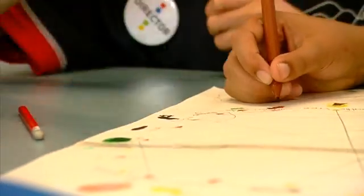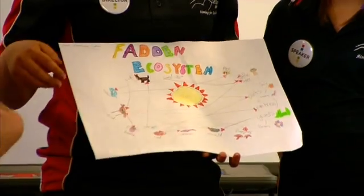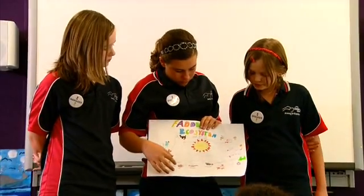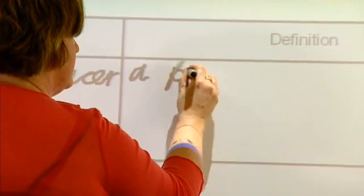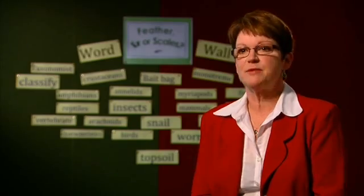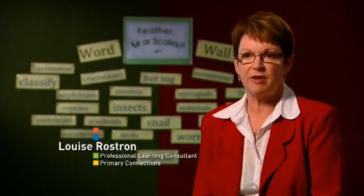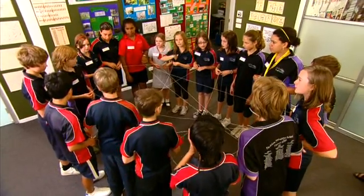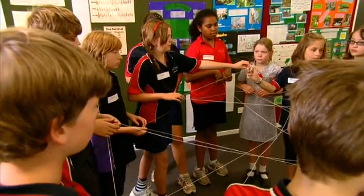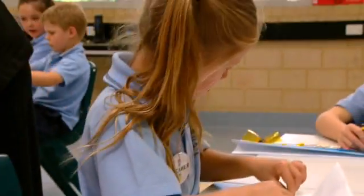The third phase of the five Es, Explain, is designed to support students to represent and explain their developing ideas, and to introduce students to scientific explanations of concepts. The Explain phase is the first phase where teachers formally introduce current scientific thinking, understanding, and vocabulary. In this phase, students are first given the opportunity to use the experiences and data collected from the Explore activities to develop explanations of the concepts.